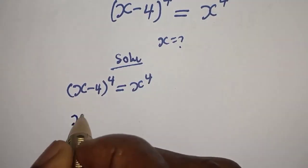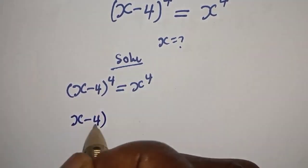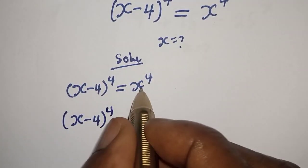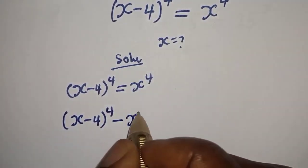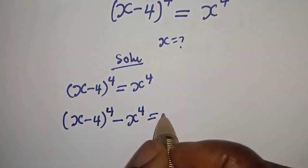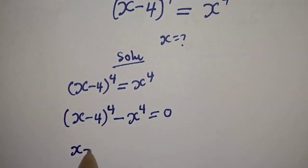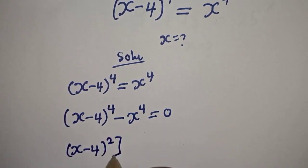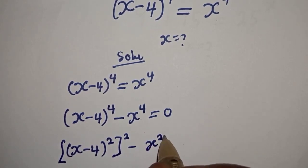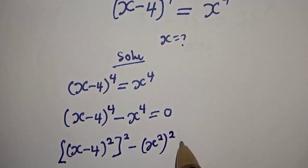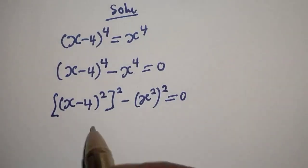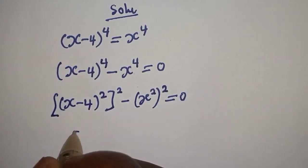So we have s minus 4 to the power 4. If we bring the s to the power 4 to this side, it becomes minus s to the power 4 is equal to zero. This can be written as s minus 4 squared, then squared, minus s squared, squared, is equal to zero.